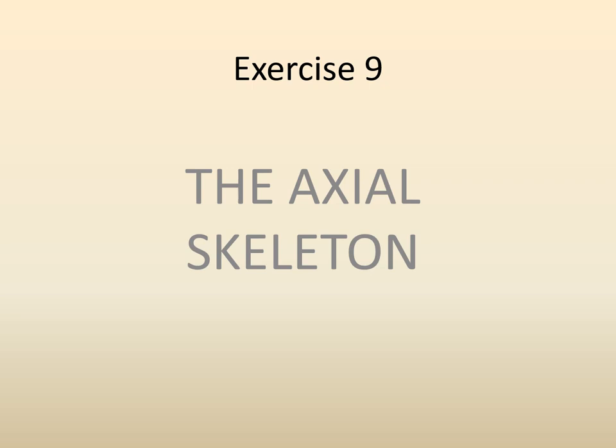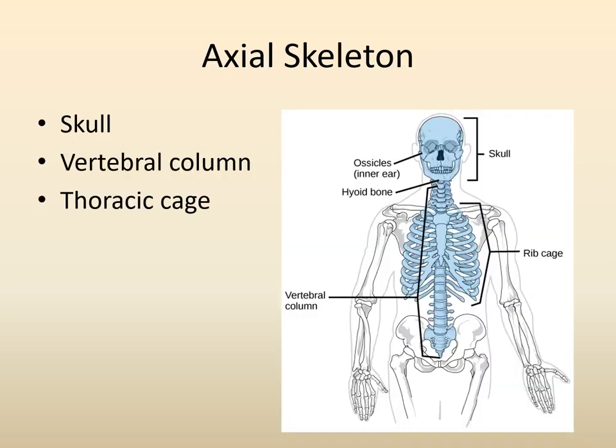Exercise 9 deals with the axial skeleton. Remember the axial skeleton is comprised of the skull, the vertebral column, and the thoracic cage.